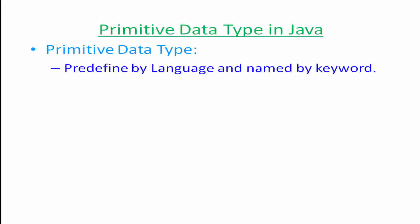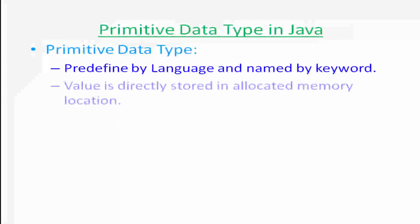A keyword is a special name which we cannot use for the name of classes, variables, or objects. For primitive data types, the value is directly stored in the allocated memory location.